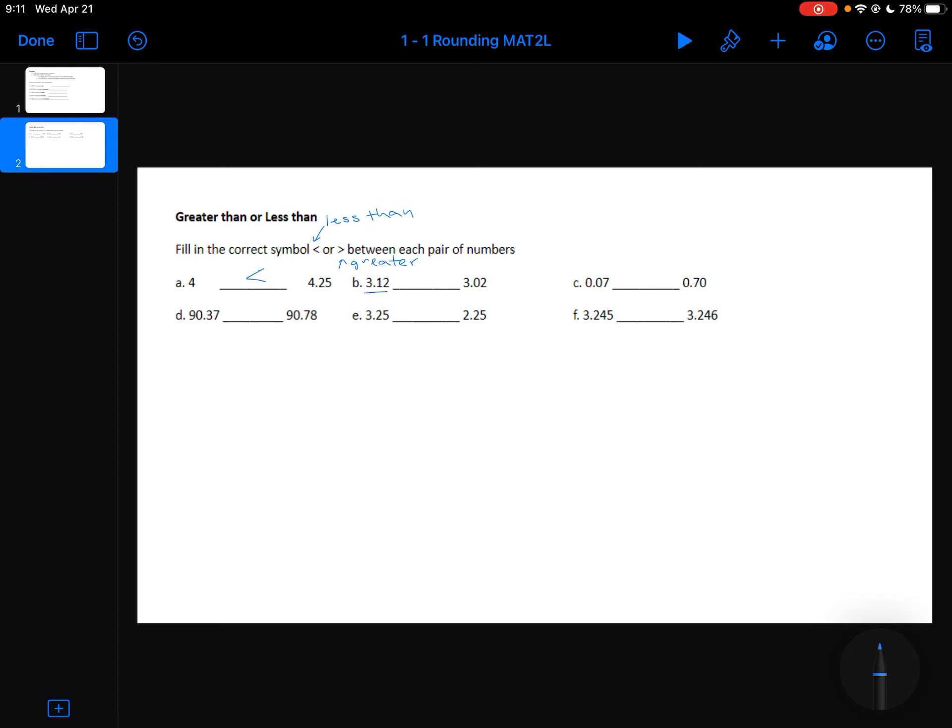3 and 12 hundredths is greater than 3 and 2 hundredths. 7 hundredths is less than 70 hundredths. 90 and 37 hundredths is less than 90 and 78 hundredths. 3.25 or 3 and 25 hundredths is greater than 2 and 25 hundredths.